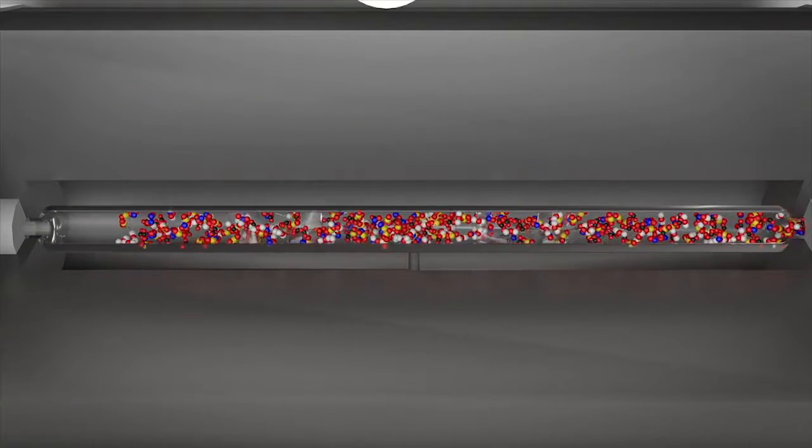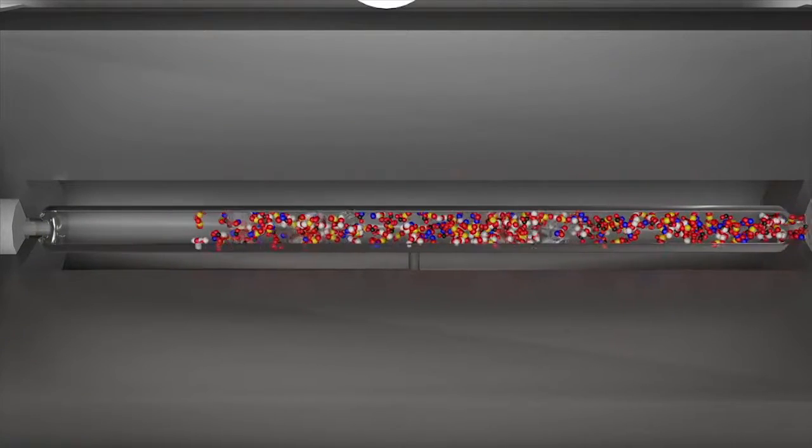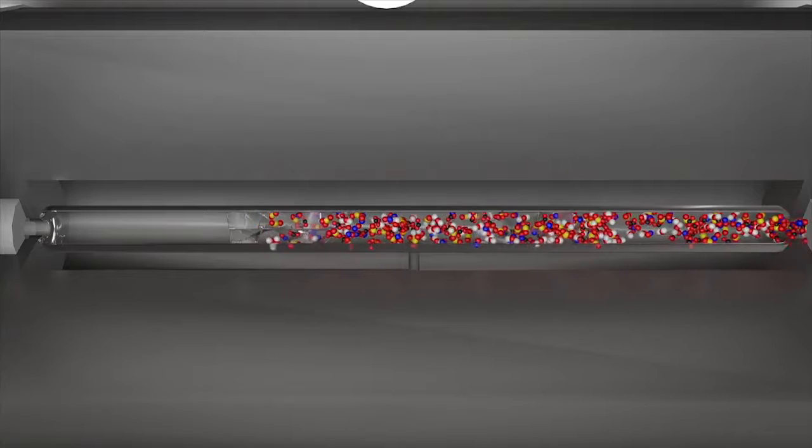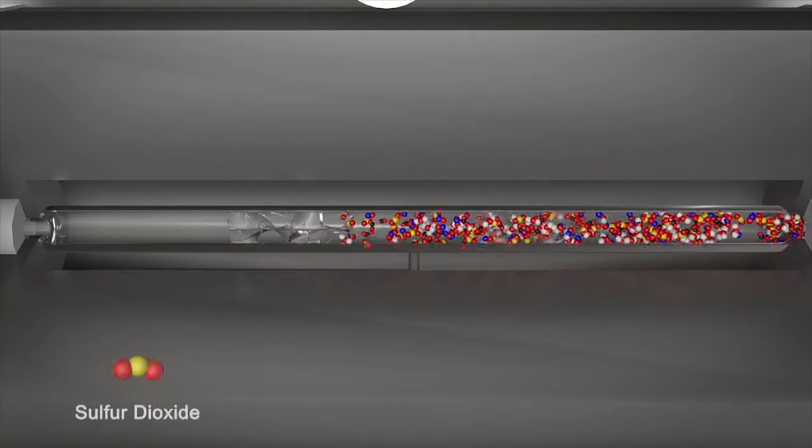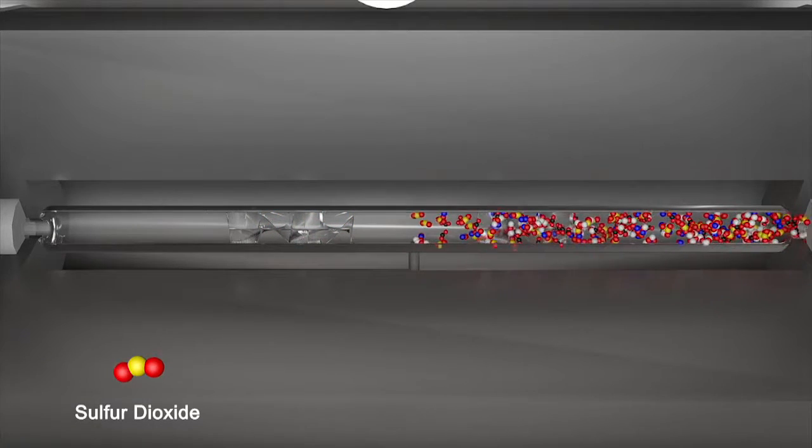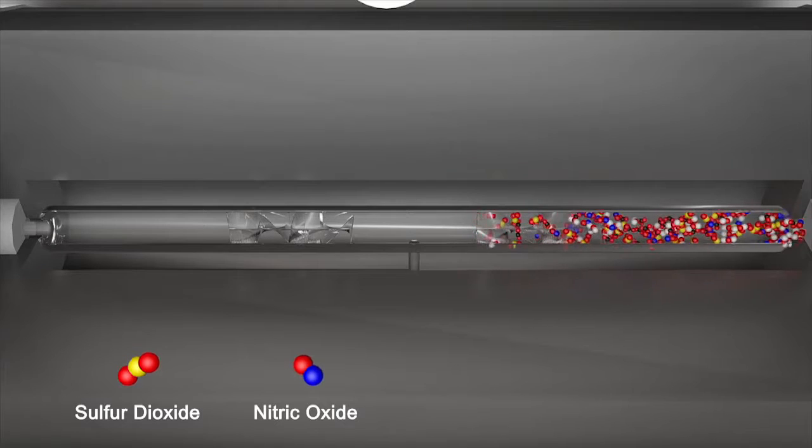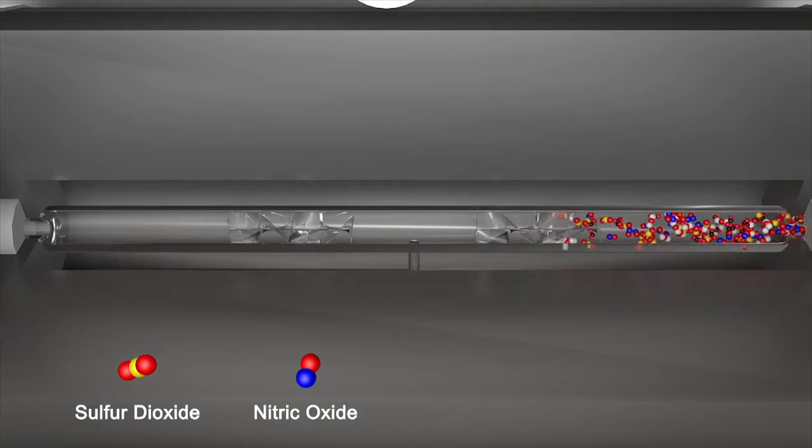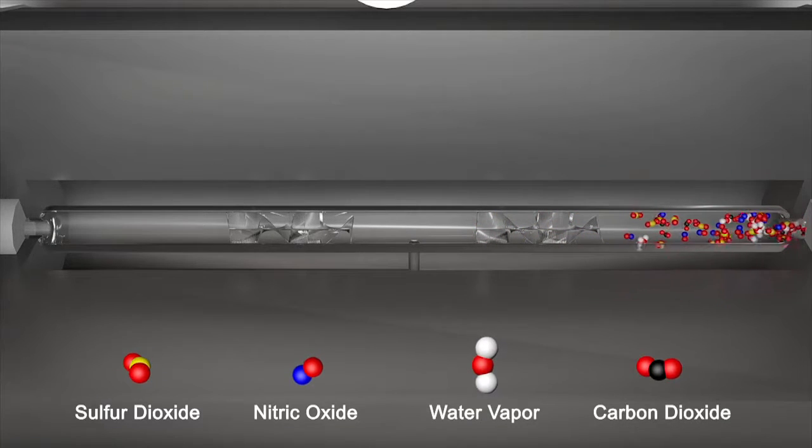Once in the furnace, the sample is completely combusted at 1050 degrees Celsius. This converts all sulfur species to sulfur dioxide and nitrogen to nitric oxide. The hydrocarbons are converted to water vapor and carbon dioxide.